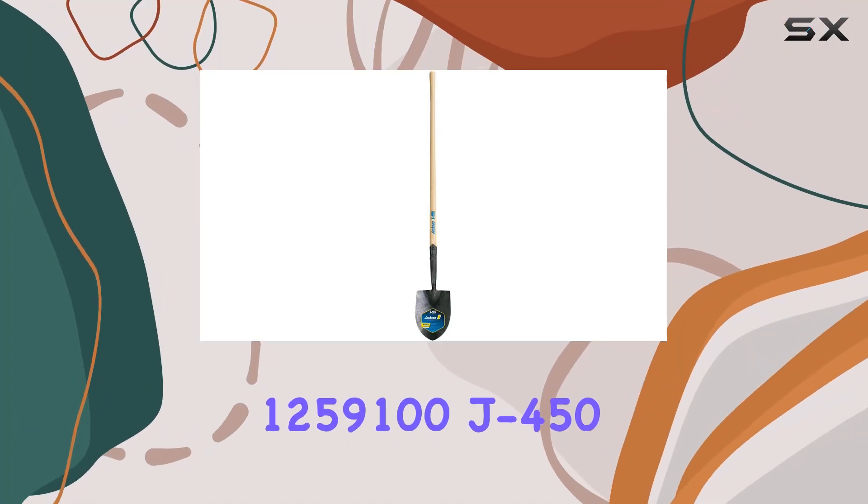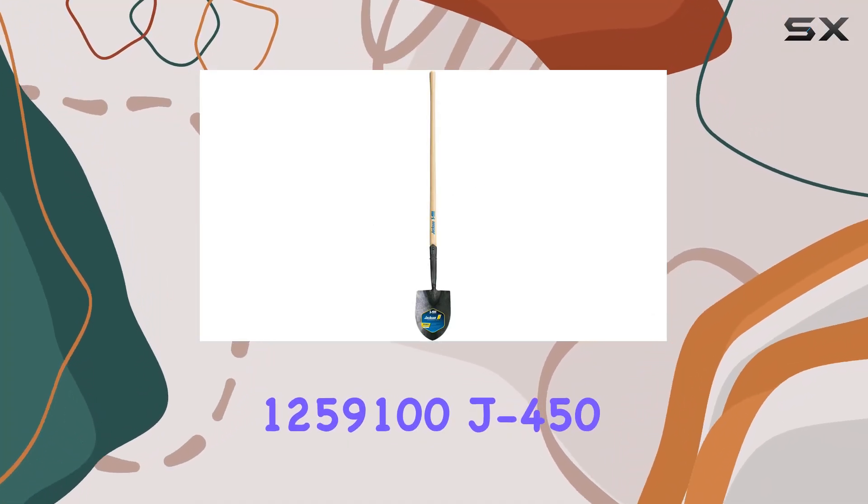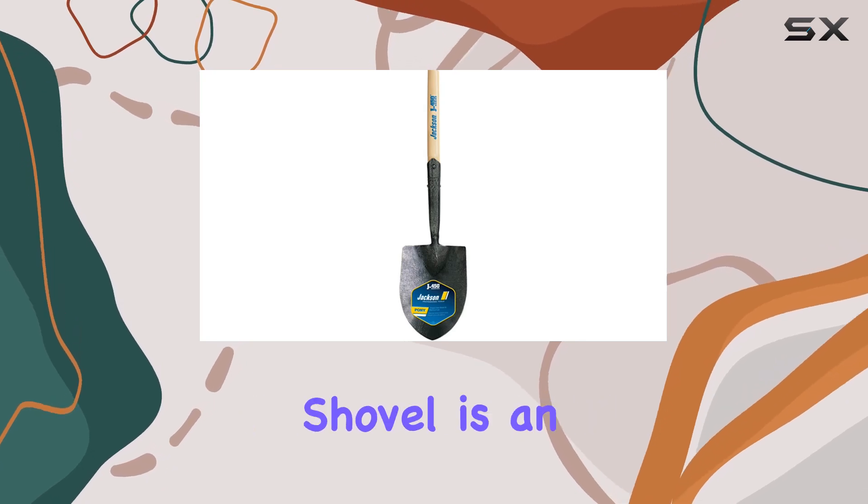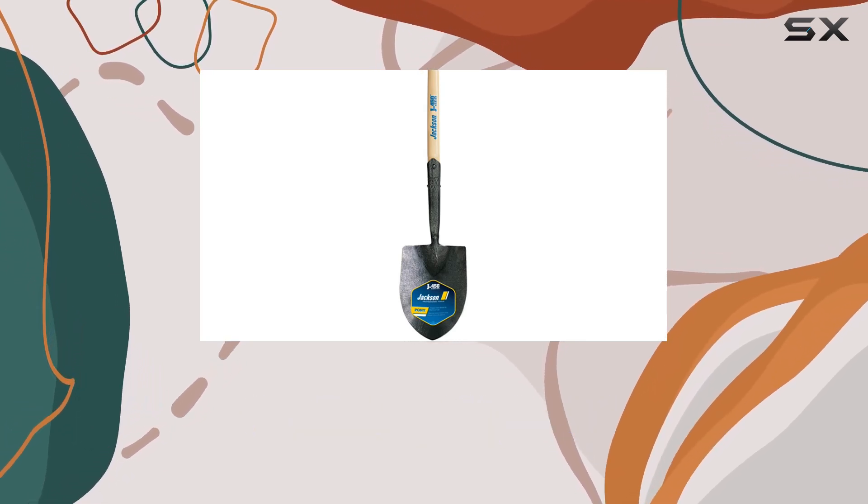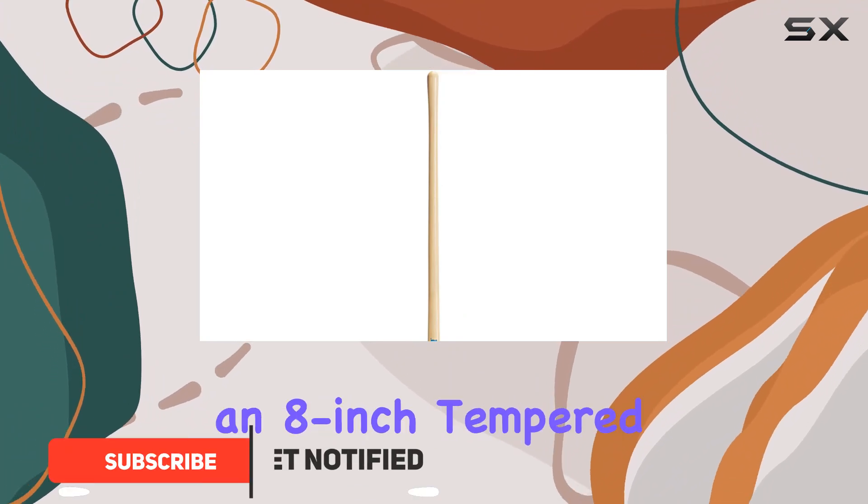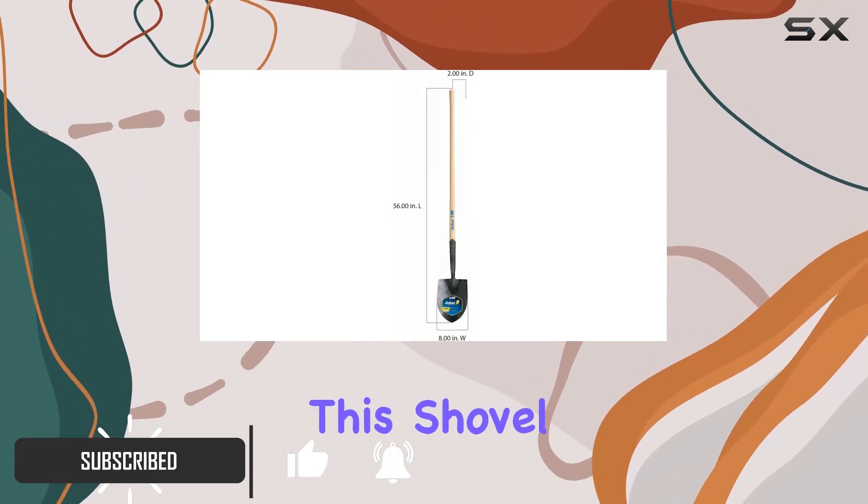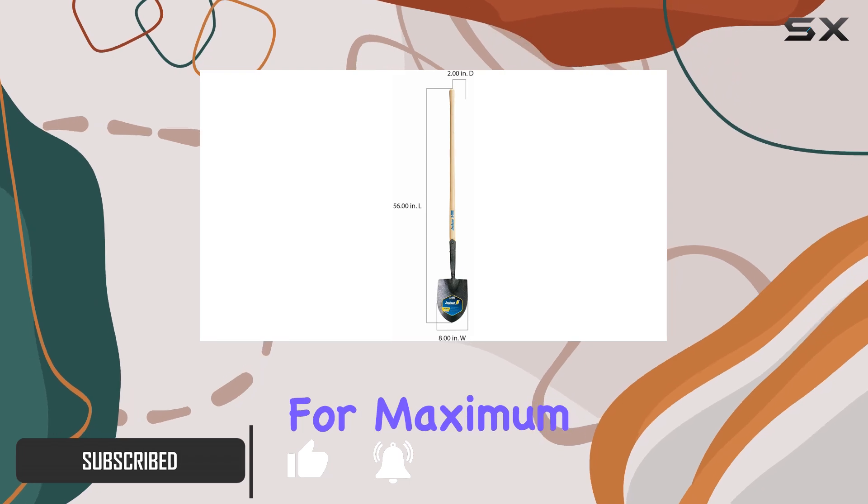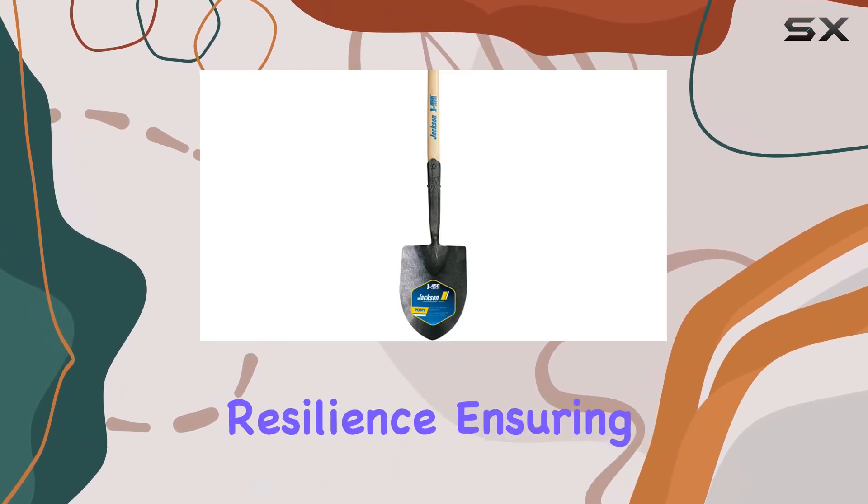The Jackson 125-9100J 450 Pony Round Point Shovel is an exceptional tool designed for heavy-duty irrigation work and tough digging tasks. Featuring an 8-inch tempered steel blade, this shovel is engineered for maximum durability and resilience.